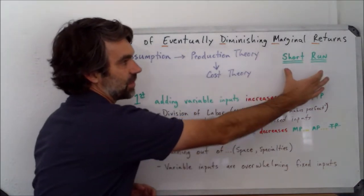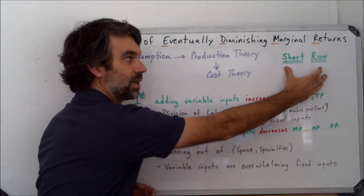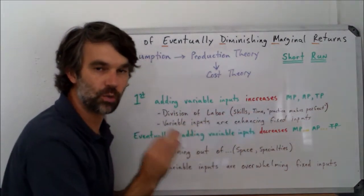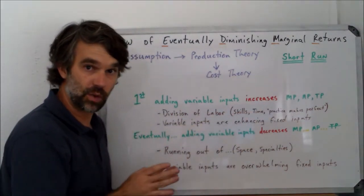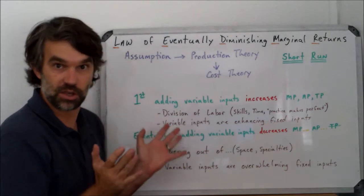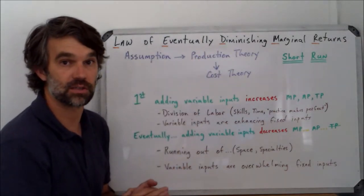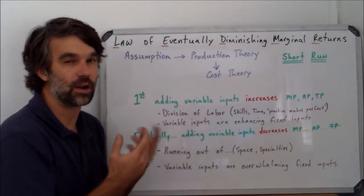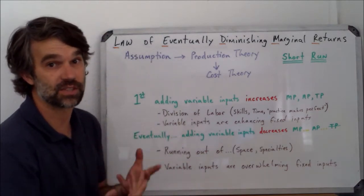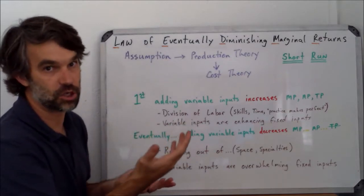When we talk about the law of eventually diminishing marginal returns, it's important to keep in mind this is a short-run assumption. In the long run, there is no idea of the law of eventually diminishing marginal returns. Instead there, we hear about an idea called diseconomies of scale, but that's something we'll look at in the future.